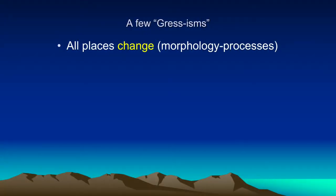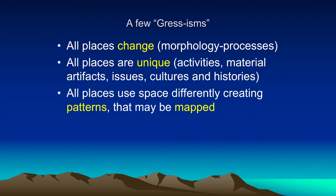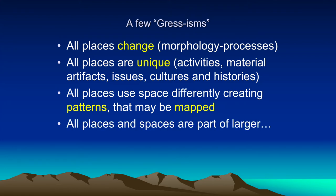Stuff I'd like us to remember: all places change. All places have morphology — it's a process. The only constant in life is change, so just get used to it. All places are unique — where you were born, where you are living now — it has its own special activities, its own material artifacts, issues, its own cultural identity and histories. All places use space differently, and these patterns can be mapped. All places and spaces are part of larger landscapes and regions.